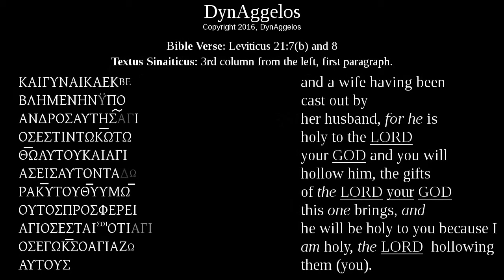Here we have Leviticus chapter 1, verse 7 — specifically the second half of verse 7 and all of verse 8. On the left we have Greek text, on the right we have English text. The Greek text comes directly from Codex Sinaiticus, and you can view Codex Sinaiticus yourself online at codexsinaiticus.org — if .org doesn't work, try .com.